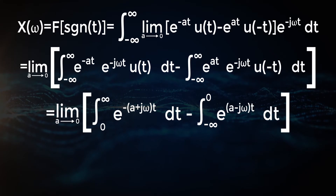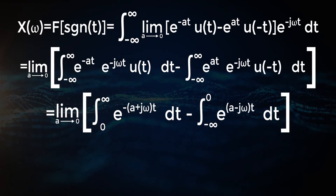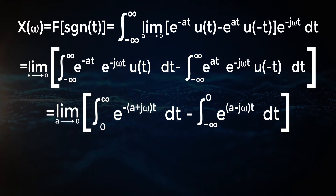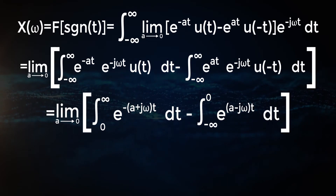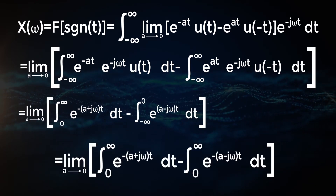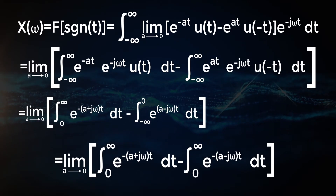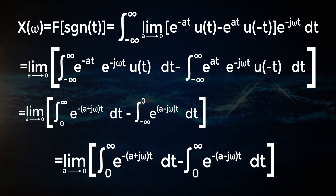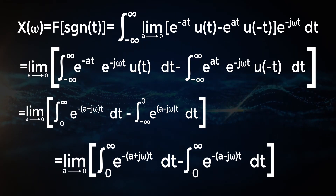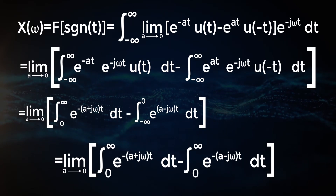Which is equal to the limit as a approaches zero of the integral from 0 to infinity of e^{-(a+jω)t} dt minus the integral from minus infinity to 0 of e^{(a-jω)t} dt, which is equal to the limit as a approaches zero of the integral from 0 to infinity of e^{-(a+jω)t} dt minus the integral from 0 to infinity of e^{-(a-jω)t} dt.